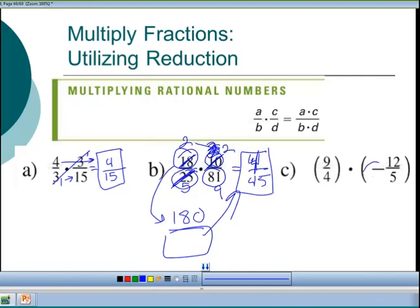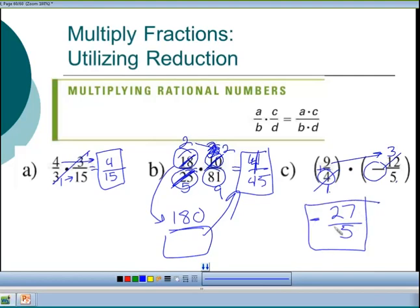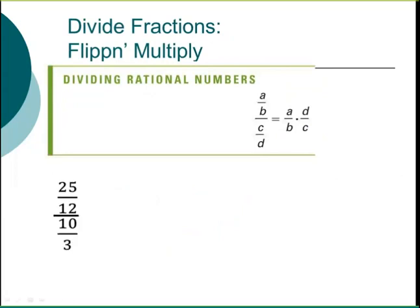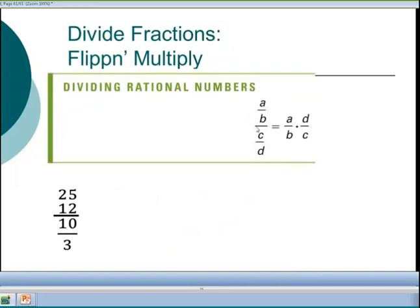For the next example written with parentheses: there's a negative times a positive, so the final answer is negative. Reduce: 4 goes into both 4 and 12, leaving 1 and 3. Then 5 and 9 can't cancel; multiply 9×3 = 27 on top and 1×5 = 5 on the bottom. The final result is negative 27/5.